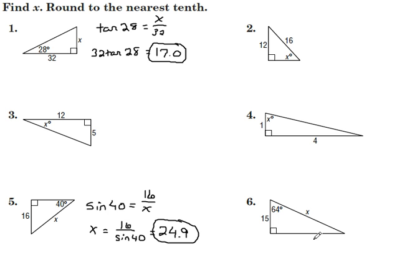Now, number 6. Our angle in question is 64, and x is hypotenuse, as 15 is adjacent. When you deal with adjacent and hypotenuse, you're dealing with cosine. So cosine of 64 is equal to 15 over x. We have the same algebra structure as number 5, so multiply both sides by x, divide both sides by cosine 64. X can be found by taking 15 divided by cosine of 64. Your calculator comes out to 34.2.